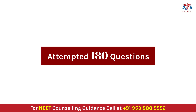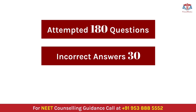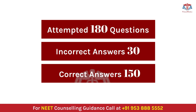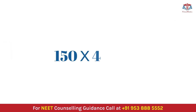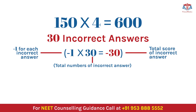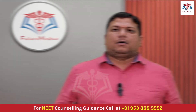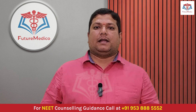If you attempted 180 questions and 30 of them are incorrect, then you have 150 correct answers. 150 × 4 = 600, and since you have 30 incorrect answers, one mark for each will be deducted, totalling minus 30. So your total score is 600 − 30 = 570, which is also your raw score.